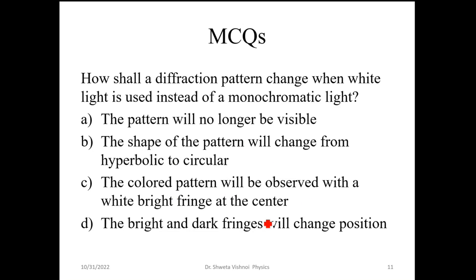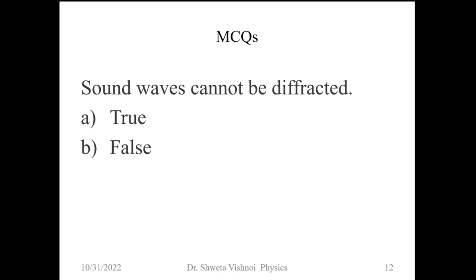The bright and dark fringes will change position. The color pattern will be observed with a white-bright fringe at the center. We will see red on the outer side, and in the center, we will get a white fringe because for all wavelengths the principal maxima will be zero at theta equals zero. In the secondary maxima, the colors will be different.